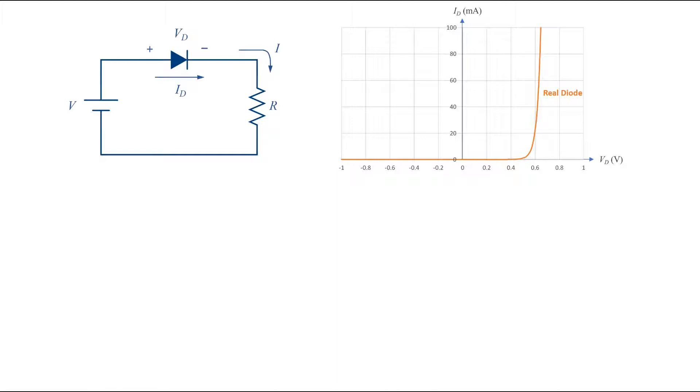Any nonlinear function at a region can be approximated to a linear function. For example, on this graph the characteristics at reverse bias or small voltages in forward bias is very close to a line. Also at high currents it is very close to a line.